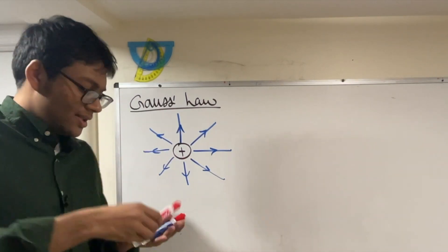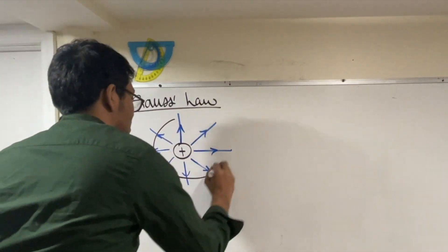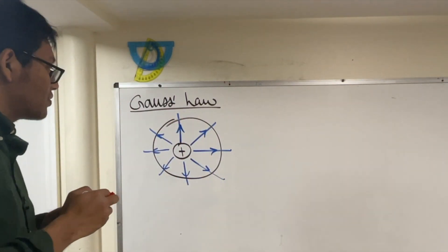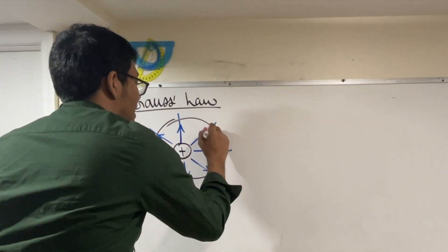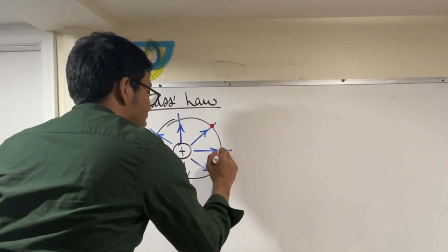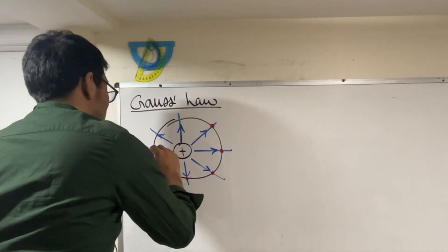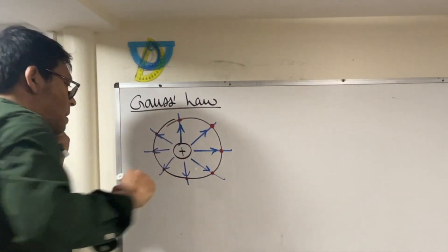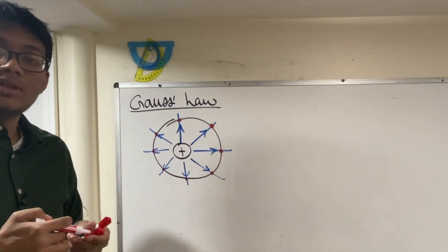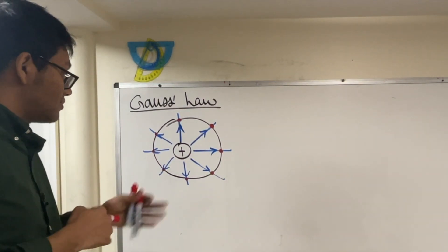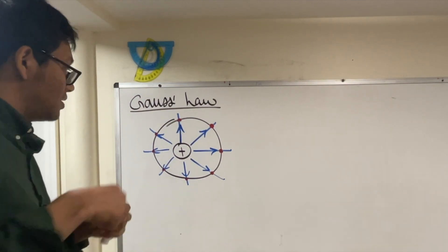Why would you do that? Well, let's see what happens. If I put a circle here, you might notice each of these electric field lines are headed outwards — they cross the circle and then they go out. Okay, big deal. Why would you do that? Who knows, who cares? It just looks like there are lines crossing a circle.